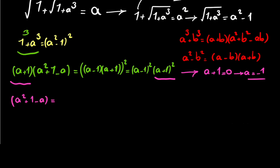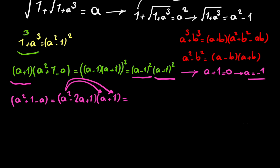On the right side, you can write a squared minus 2a plus 1, instead of a minus 1 squared, times a plus 1. So if we multiply these two expressions, we get a cubed plus a squared, then minus 2a squared minus 2a.